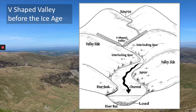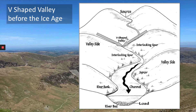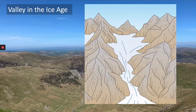Our U-shaped valley doesn't have these interlocking spurs in it, so they must have gone somewhere — we'll have a look at that later. Our ice age is upon us now and this river valley is going to fill up with ice, freezing the river and becoming deeper. Let's have a look at what it would look like when it's full of ice.